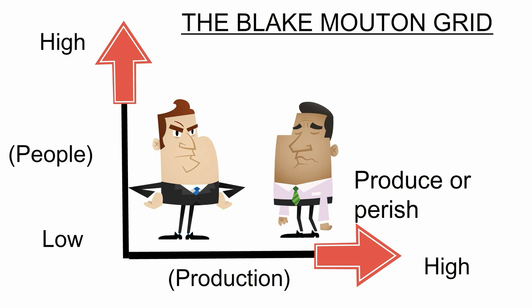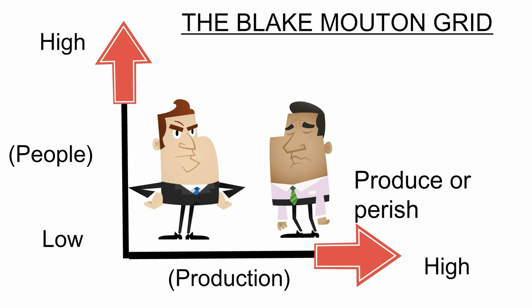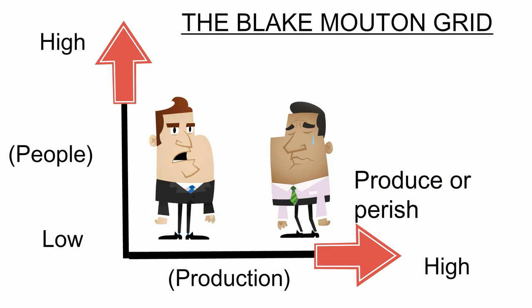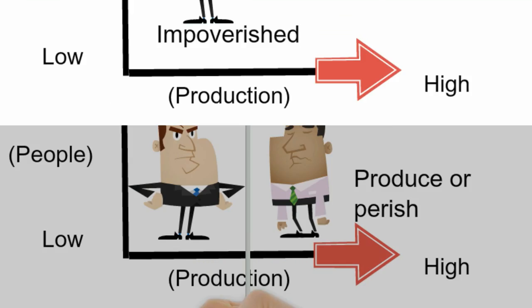Produce or Perish Leadership. This kind of leader sees employees as first and foremost a means of achieving corporate objectives. Produce or perish leaders believe that people are mostly motivated by money. They focus on efficiency and productivity and don't spend much time thinking about motivating staff.